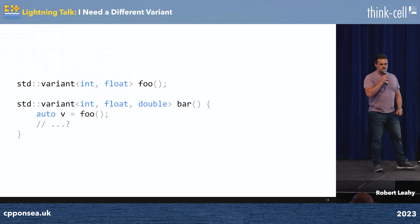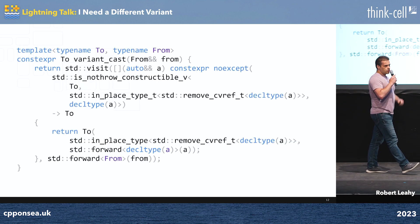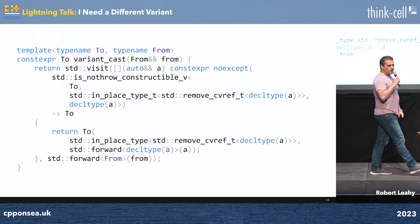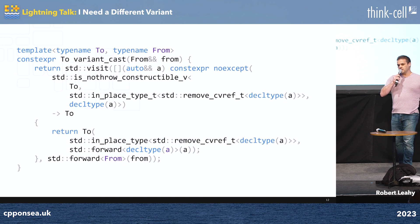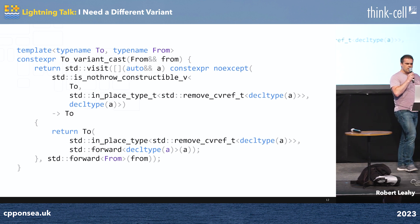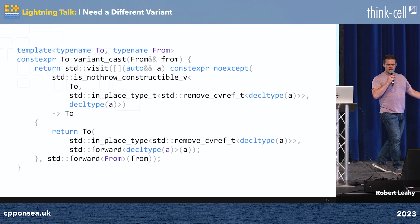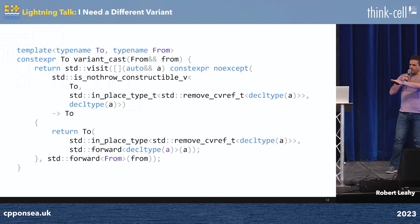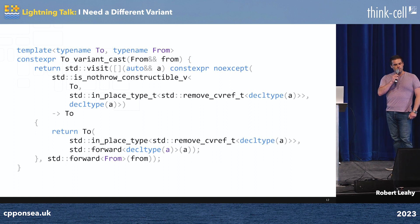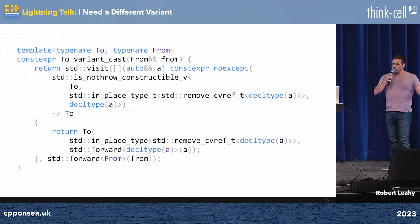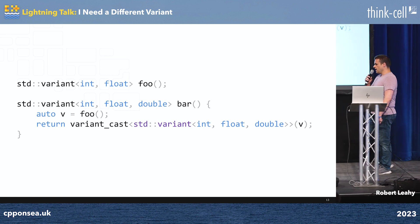Or are you going to engage in every C++ programmer's favorite pastime — yak shaving with generic programming? Are you going to write `variant_cast`, where you take `visit`, feed it into a generic lambda, and map each and every one of the alternatives through into the destination variant type? Once we have this utility, we can plug it into our code, and then it works.